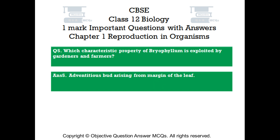Question number 5: Which characteristic property of Bryophyllum is exploited by gardeners and farmers? Answer number 5: Adventitious buds arising from the margin of the leaf.